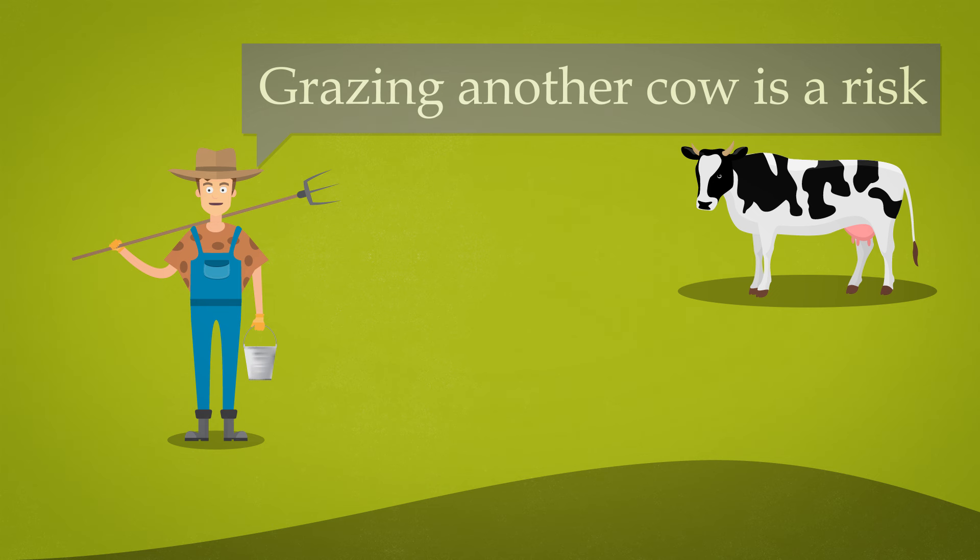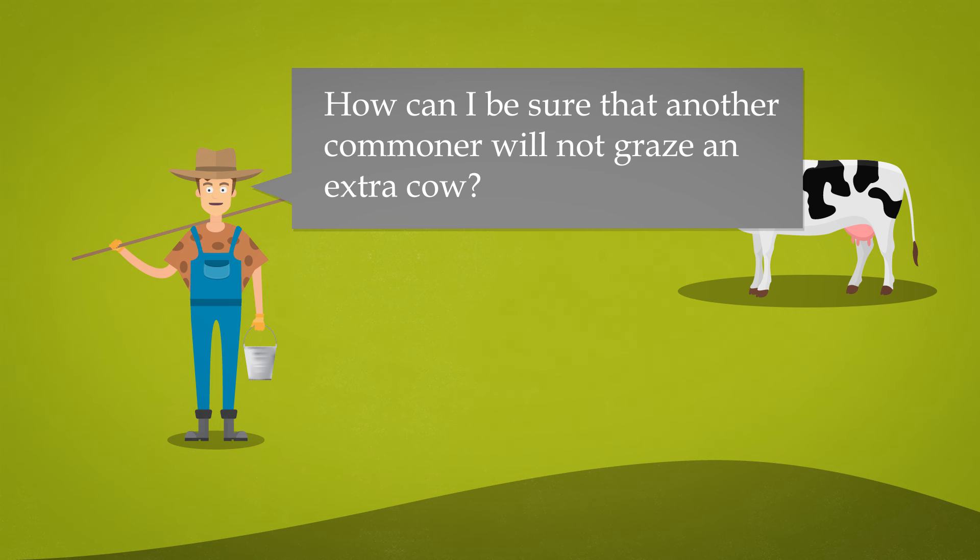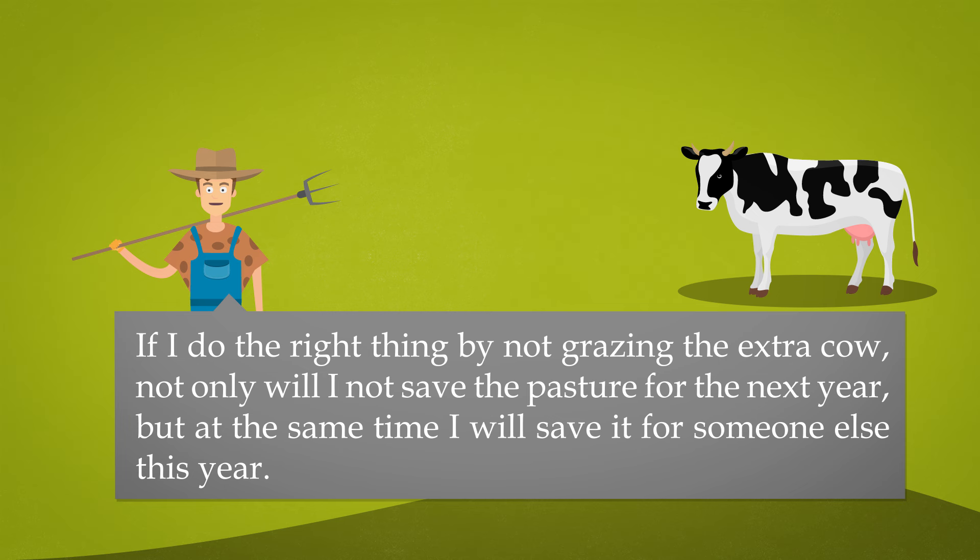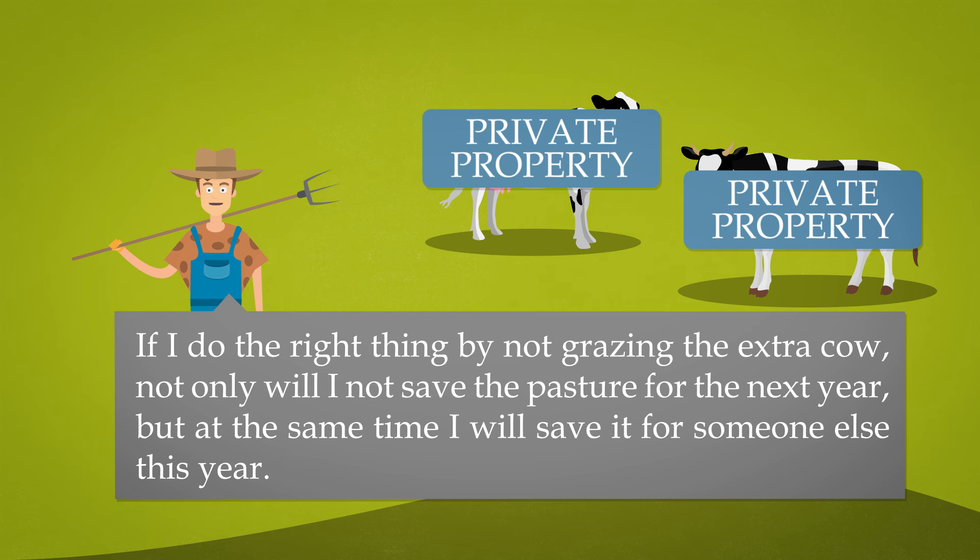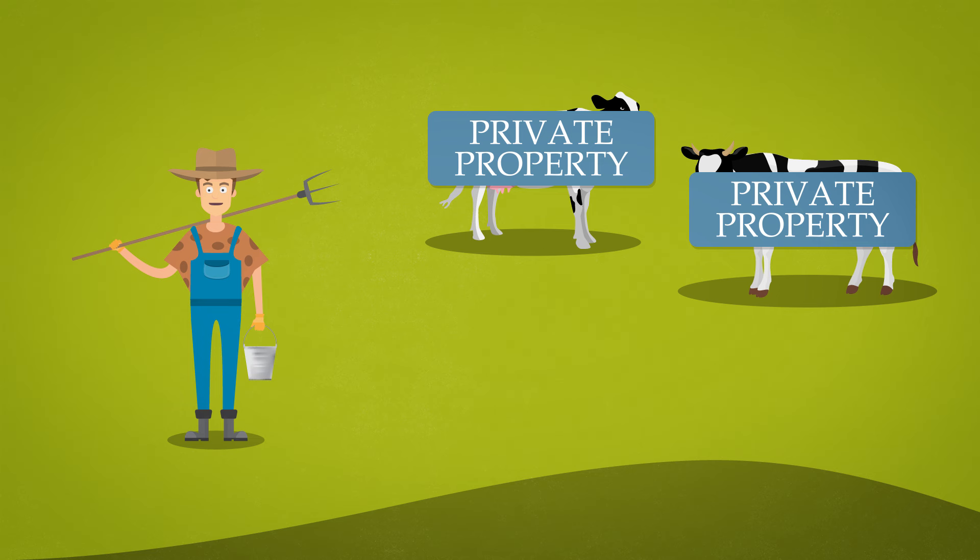How can I be sure that another commoner will not graze an extra cow? In such a case, I will not be able to use the pasture next year, as it will be barren, and at the same time my sixth cow will be less fed this year. If I do the right thing by not grazing the extra cow, not only will I save the pasture for next year, but at the same time I will save it for someone else this year. That is why I decided to bring an extra cow to the pasture.